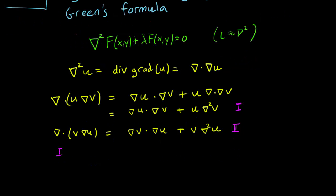We can then subtract 1 and 2 to obtain the following equation. So when we subtract the left-hand side, we get the divergence of u gradient v minus v gradient u, and we can factor out the divergence that way.